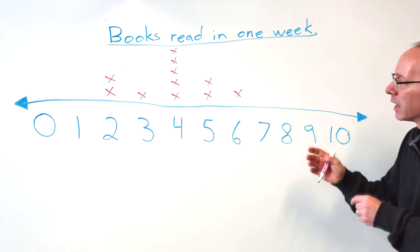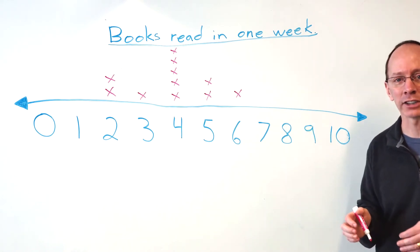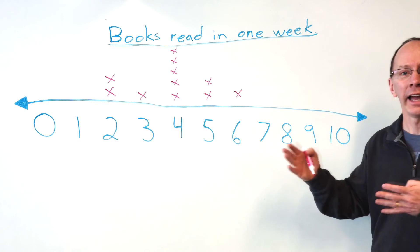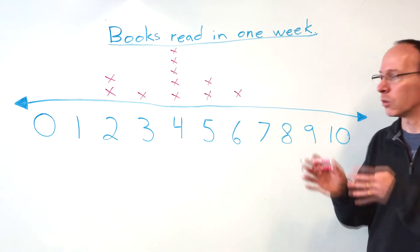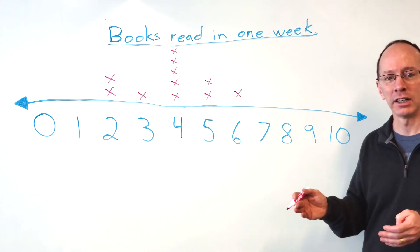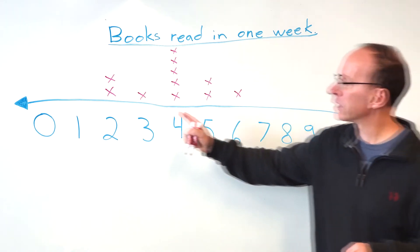So a couple questions you might ask when you have your line plot. You can figure out, okay, how many people were in the survey? How many students participated? So we can count that up very easily.